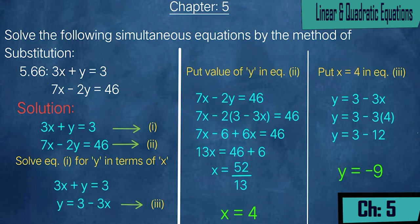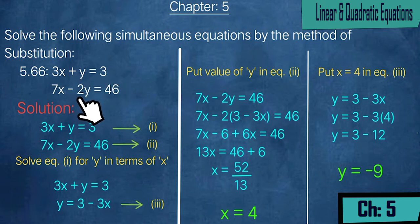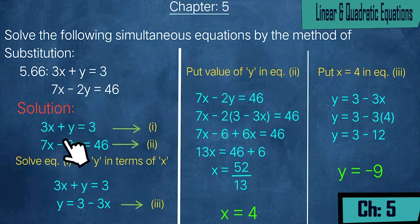Here we have taken: solve the following simultaneous equations by the method of substitution. We have taken exercise 5.66: 3x + y = 3 and 7x - 2y = 46. We have written both equations here and named them equation 1 and equation 2.